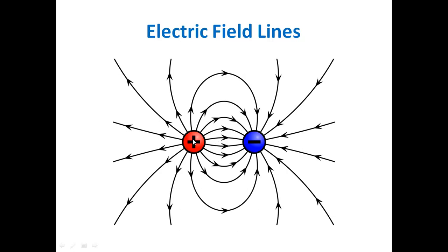Similarly, if we take a positive charge and a negative charge separated by some distance, we can find the electric field lines using the same methodology. If you put a unit test charge at a point, the force due to the positive charge will be along the line joining them, and for the negative charge the force will be in its direction. Taking the resultant of both forces gives the direction along the tangent at that point, and the resulting electric field lines will look like this.